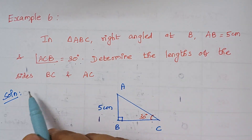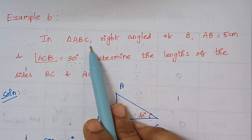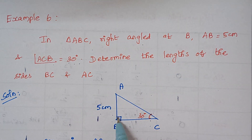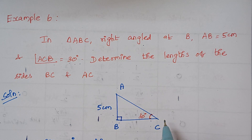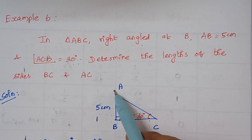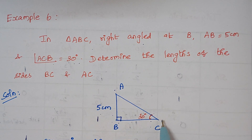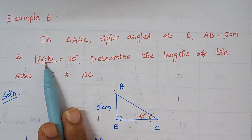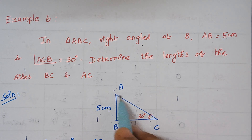We need to determine the lengths of sides BC and AC. We have a right angle triangle designated as ABC. Draw a right angle triangle — it is right angled at B, so B holds an angle of 90 degrees. We write A and C at the other vertices. AB is 5 centimeters and angle C is 30 degrees. We have to find BC and AC.